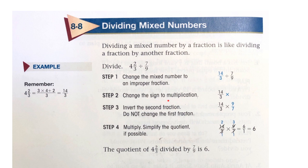Step 2, change the sign to multiplication. Step 3, invert the second fraction. Do not change the first fraction. So 7/9 becomes 9 over 7.